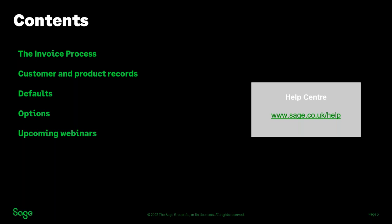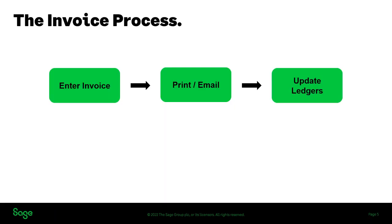The first area we're going to look at is the invoice process itself — three key steps. Entering your invoice: we'll look at both product invoicing and service invoicing. We'll look at printing and emailing it, and also updating the ledgers. The logical order is to enter the invoice, print or email it, and then update it to the ledgers — but those last two steps are completely interchangeable. Let's share the screen and get stuck into some demos.